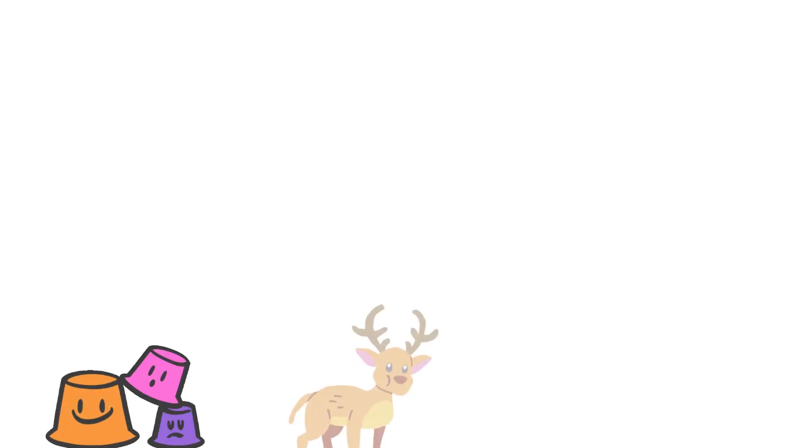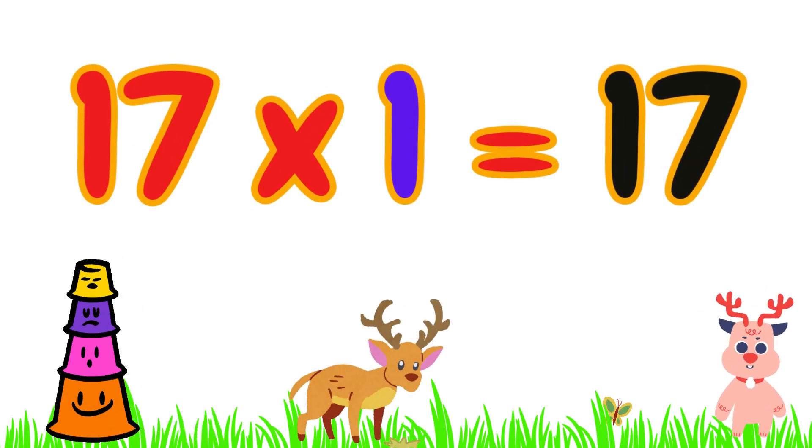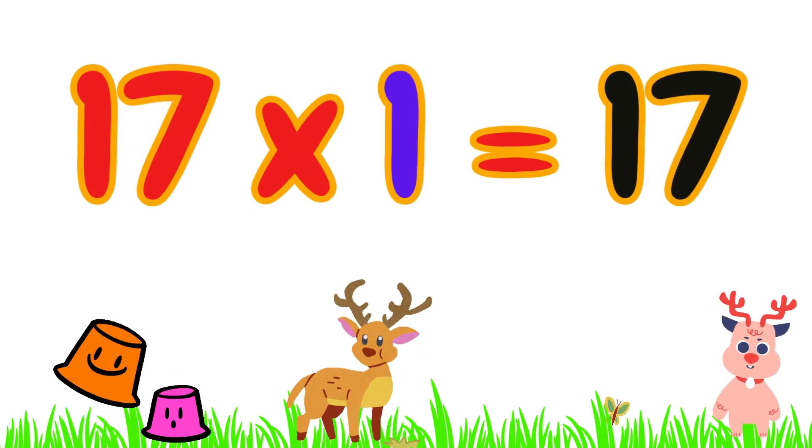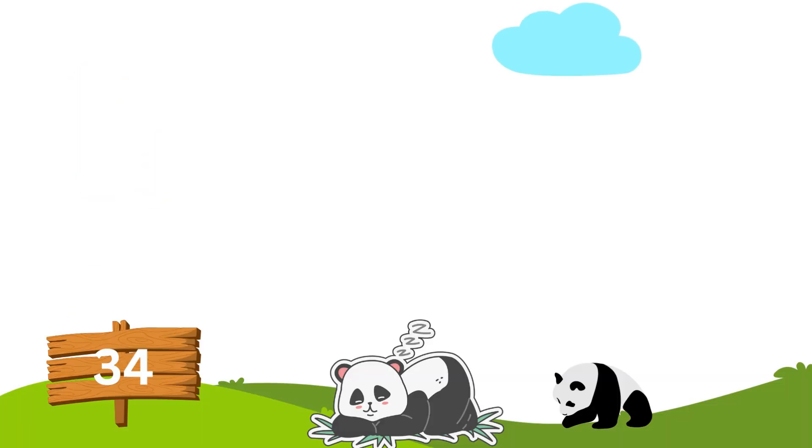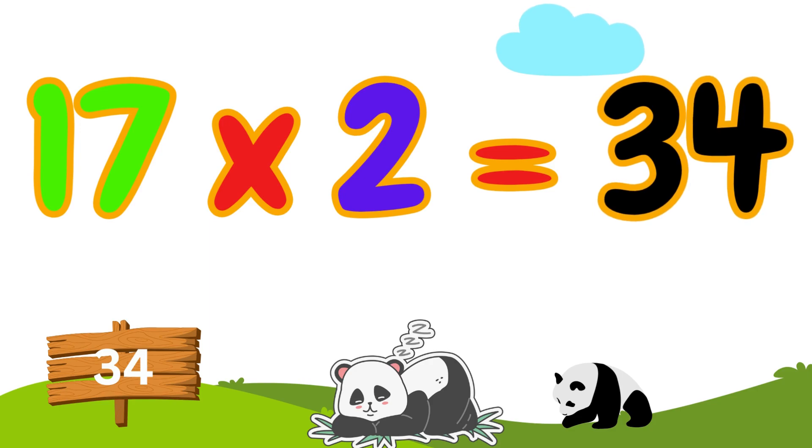Let's start table of 17. 17 times 1 is 17. 17 times 2 is 34. 17 times 2 is 34.